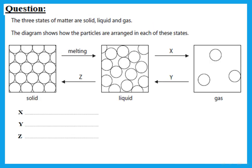Let's look at some questions. This question says the three states of matter are solid, liquid, and gas. The diagram shows how the particles are arranged in each state, with arrows labeled X, Y, and Z. Please notice the direction of each arrow. X is from liquid to gas — that is boiling. You can also say evaporation, but we usually write boiling.